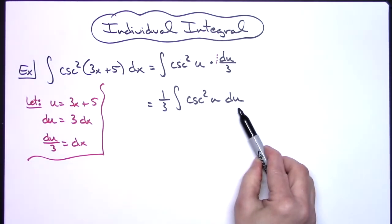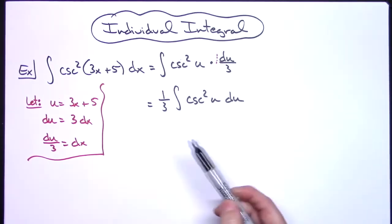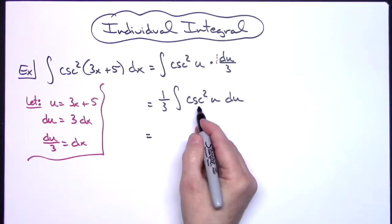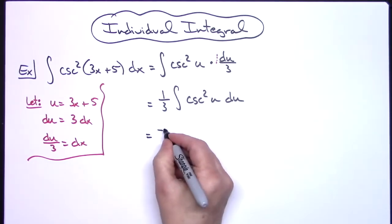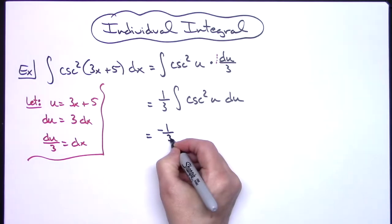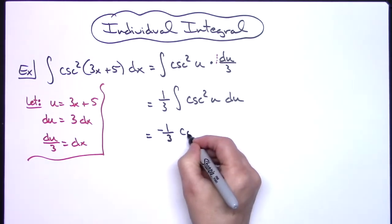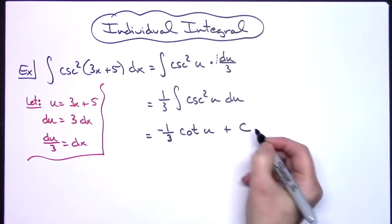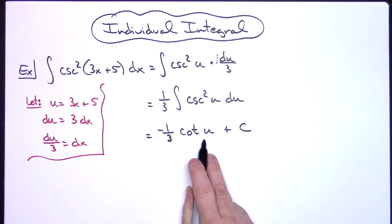Hopefully in the beginning calculus class at this point you have the integral of cosecant squared u memorized as the negative cotangent. So when I integrate here, it'll be negative, so I'll put that negative in front of the 1/3, and then I'll have cotangent of u plus C.